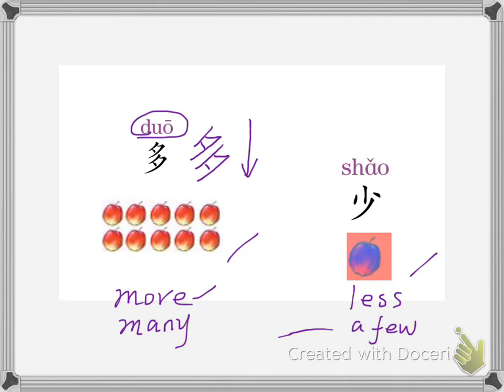It's written from top to bottom. Less, or a few, in Chinese is 少. The writing is like this: this is the first stroke, this is the second stroke, this is the third stroke, and this is the fourth stroke.